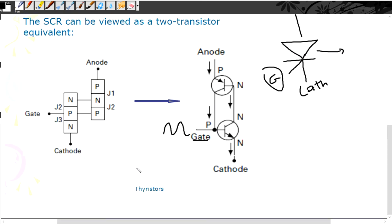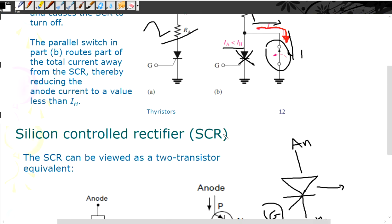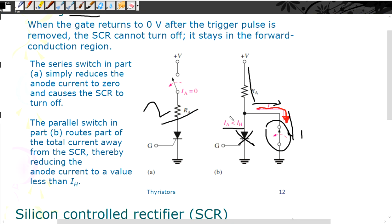So really the SCR is very simple. It's always on when you send an impulse to the gate. That's what you have to know, and you just have to know how to turn it off.